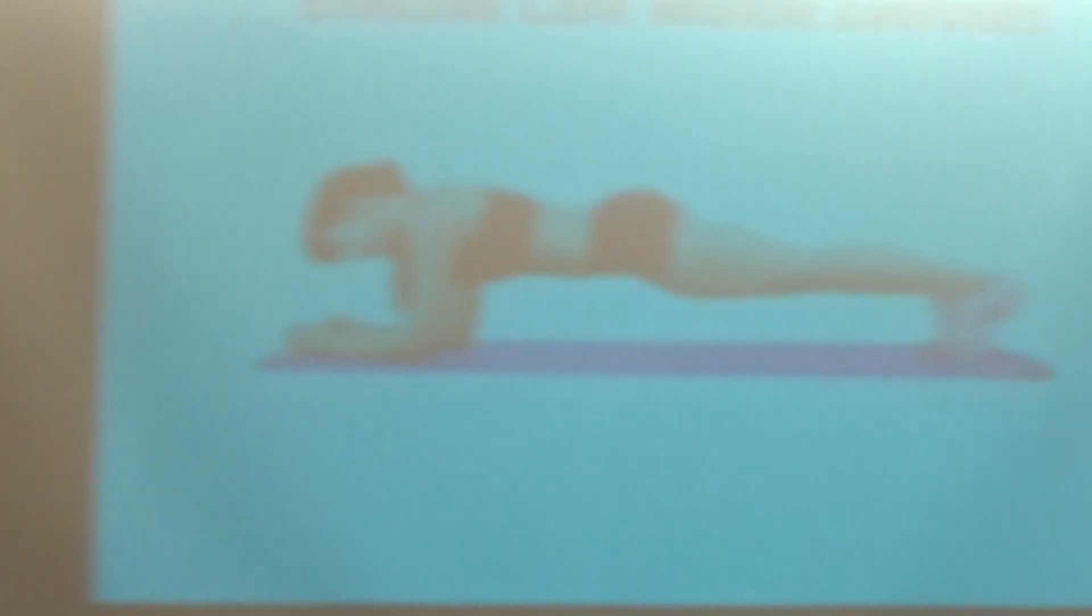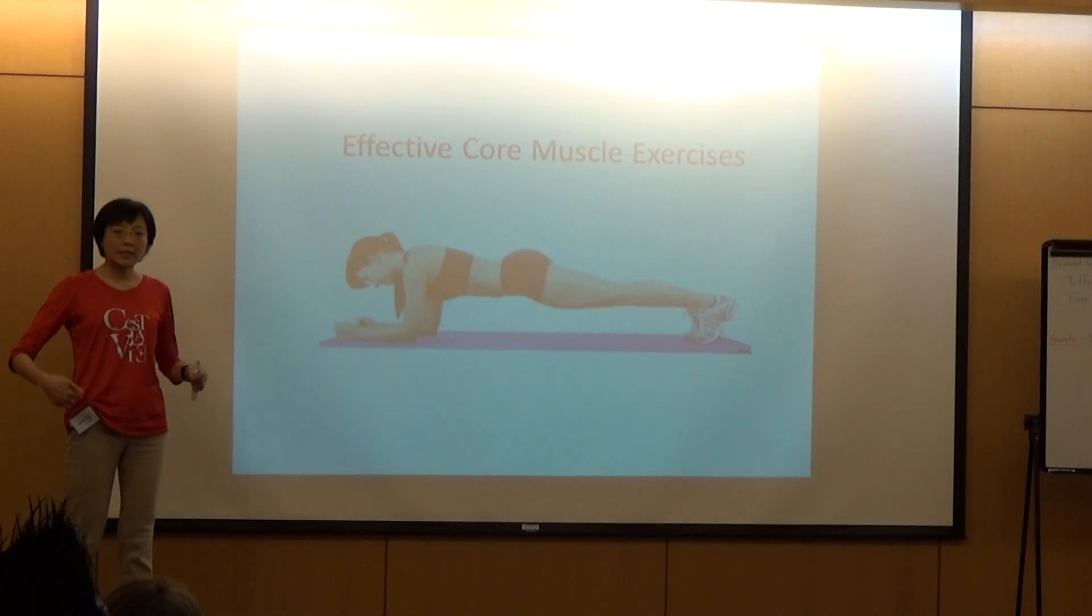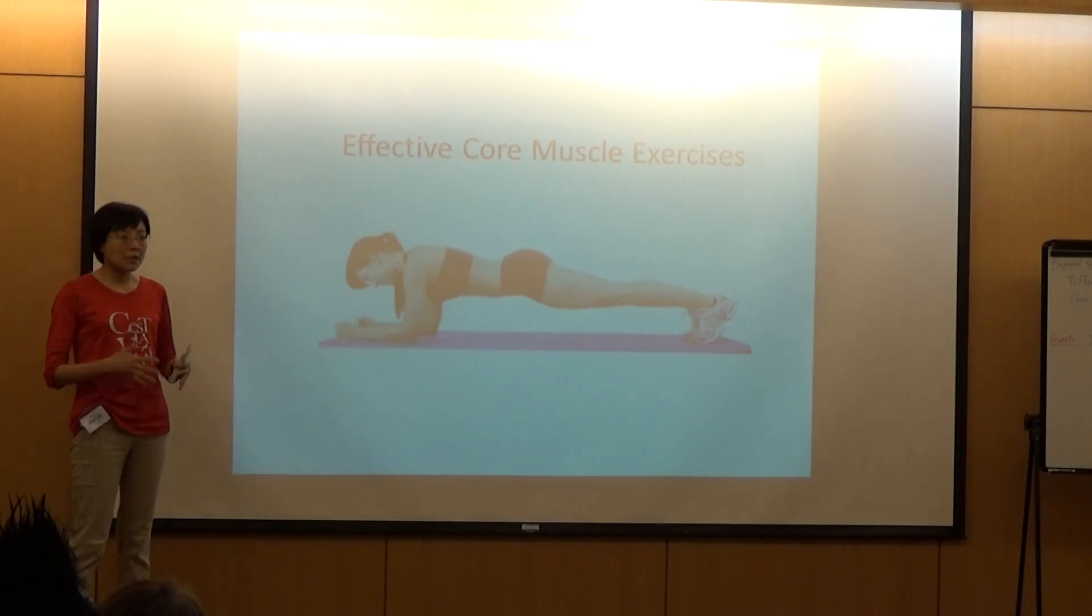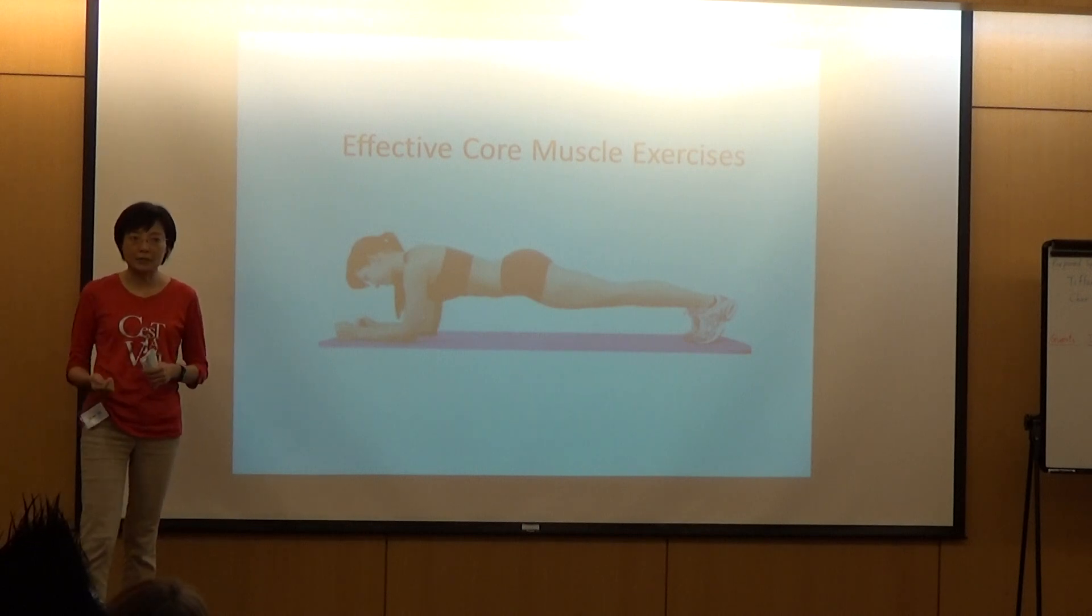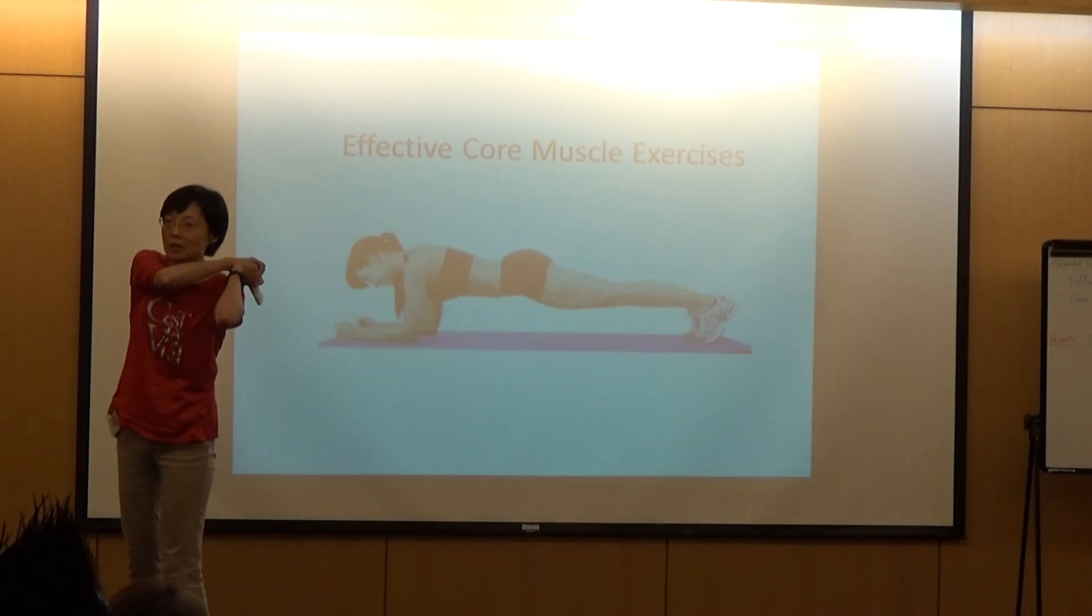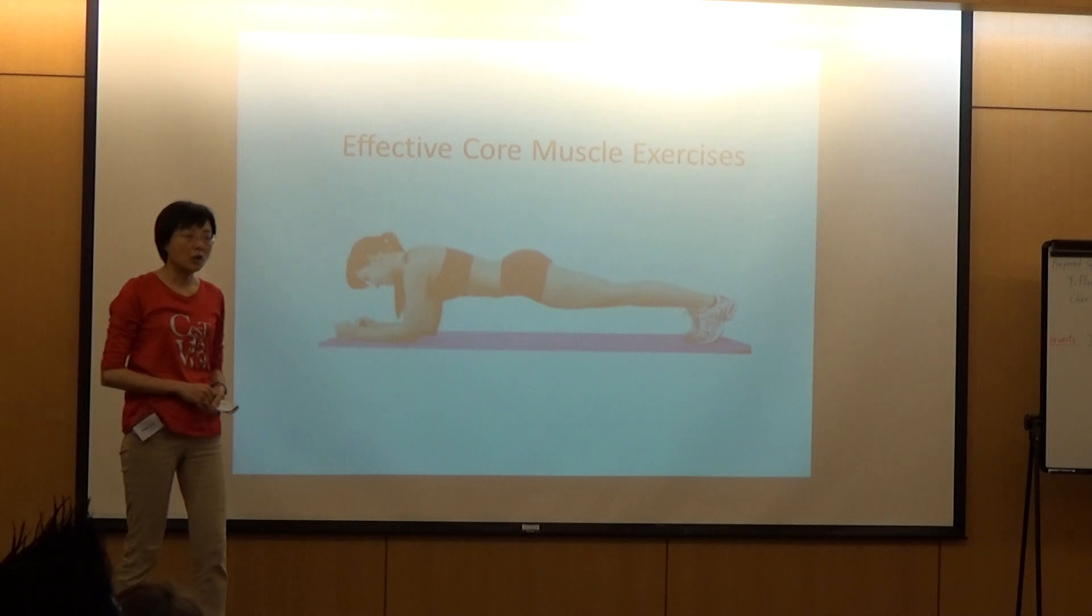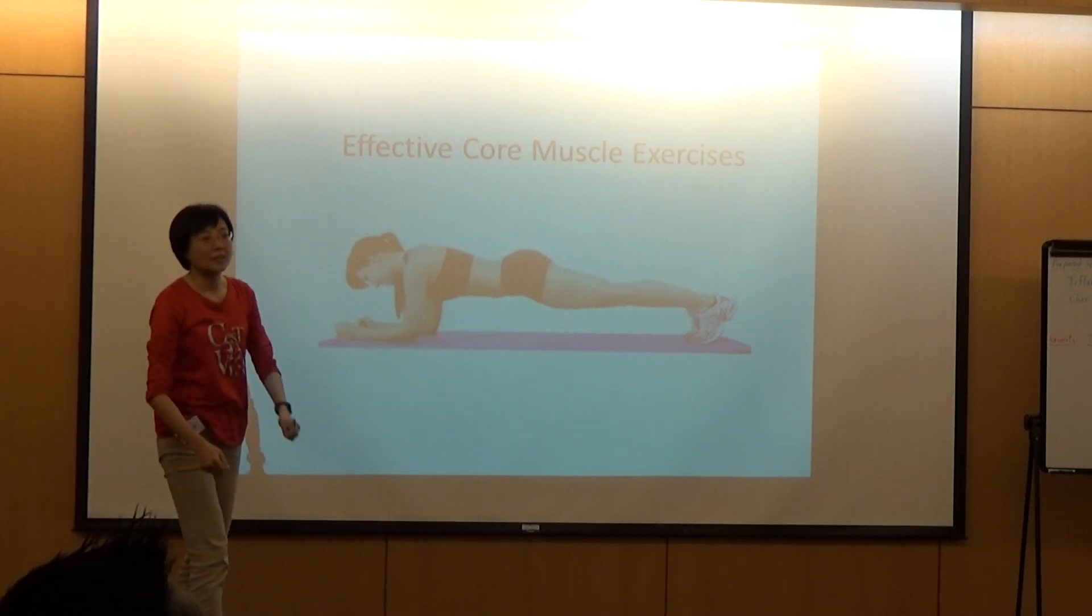Effective core muscle exercises. Core muscle is here, this part, and this is very important for our body. If we have strong core muscles, they can help us do more activities such as swinging a golf club, taking a glass from the top of the shelf, or even tying your shoes.